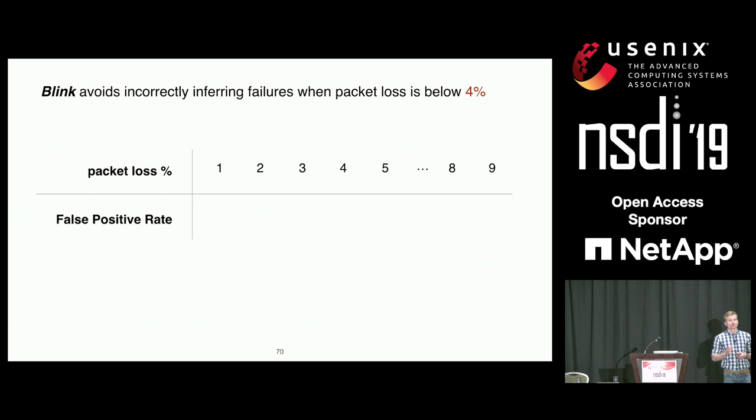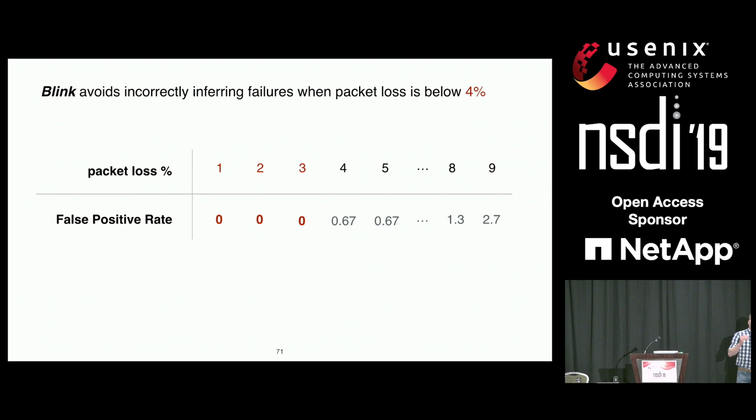What about false positive rates? We again used synthetic traces but simulated random packet loss from 1% to 9% instead of failures, and computed the false positive rate. It turns out that below 4% packet loss, Blink never inferred any failure. This is a good sign, because generally on the internet packet loss is less than 4%, which means Blink is unlikely to have many false positives in practice.